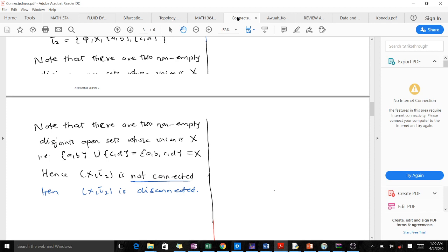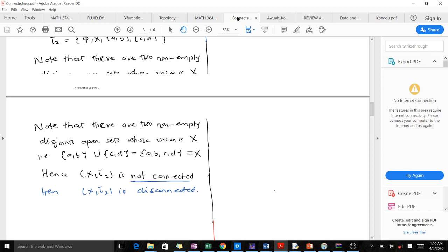Let's look at more examples. Another example is taking a look at this topological space. Our X is {A, B, C, D} and our topology T is {∅, X, {A, B}}. You realize that there are no two open sets in T which are disjoint and such that their union is X. Hence we see our (X, T) is a connected space.